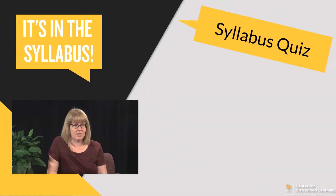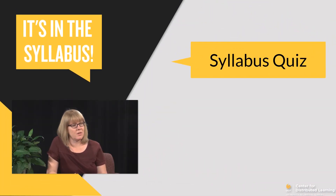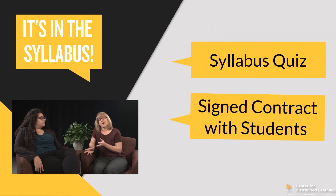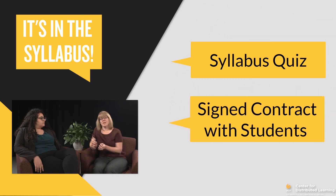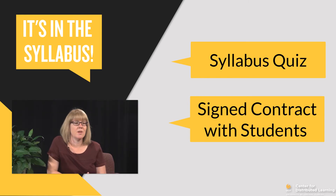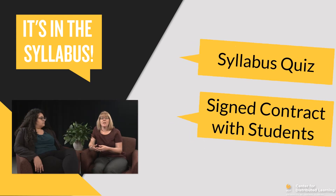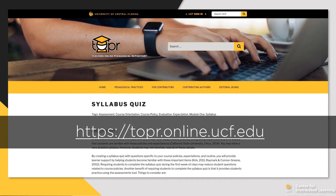There are a couple of strategies. One is creating a syllabus quiz at the beginning of the course — just a quiz that asks students to evaluate their knowledge based on what they've read in the syllabus. Another way is to have a contract of sorts where the student checks a box and says 'yes, I have read the syllabus and I'm going to adhere to the policies,' sign it, and submit it as a first assignment. If you're interested in either of those strategies, please visit the Teaching Online Pedagogical Repository, which has entries about both approaches.